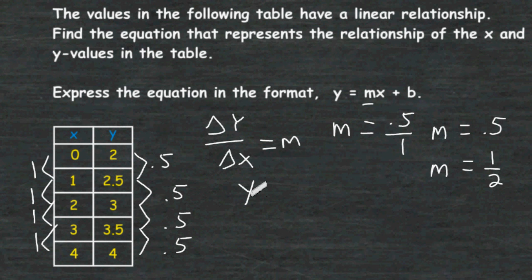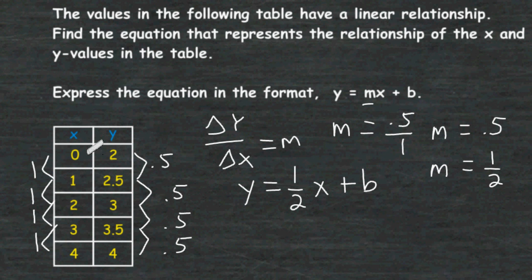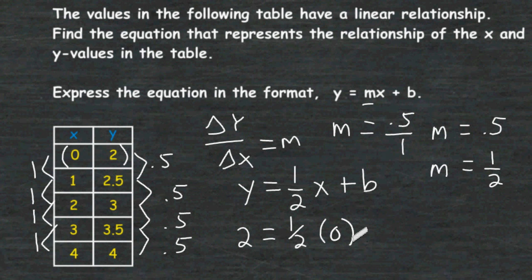Now that we know m equals one half, let's substitute that into the equation and choose an ordered pair from our table to plug into x and y. Using the first ordered pair, 0 and 2: we substitute y with 2 and x with 0. One half times 0 is 0, so all that remains on the right-hand side is b. Therefore, b is equal to positive 2.